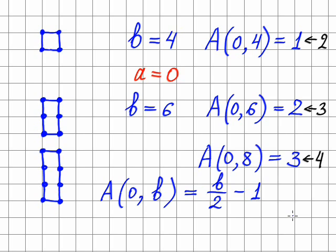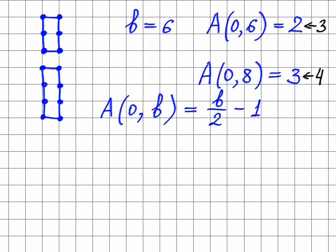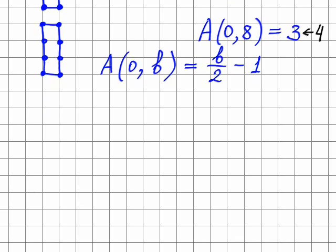So now let us determine the dependence of the area on the parameter a. To do it we have to draw a slightly different parallelogram. For example, let's draw a parallelogram like this, so that now it has non-zero a. So here is a equal to 1, and b is equal to 4.